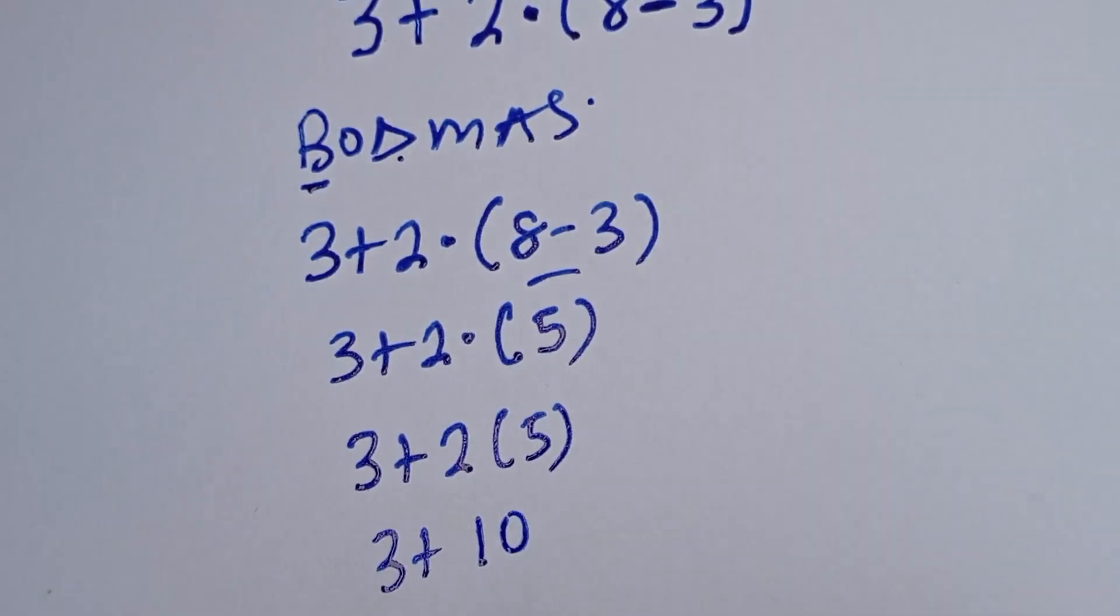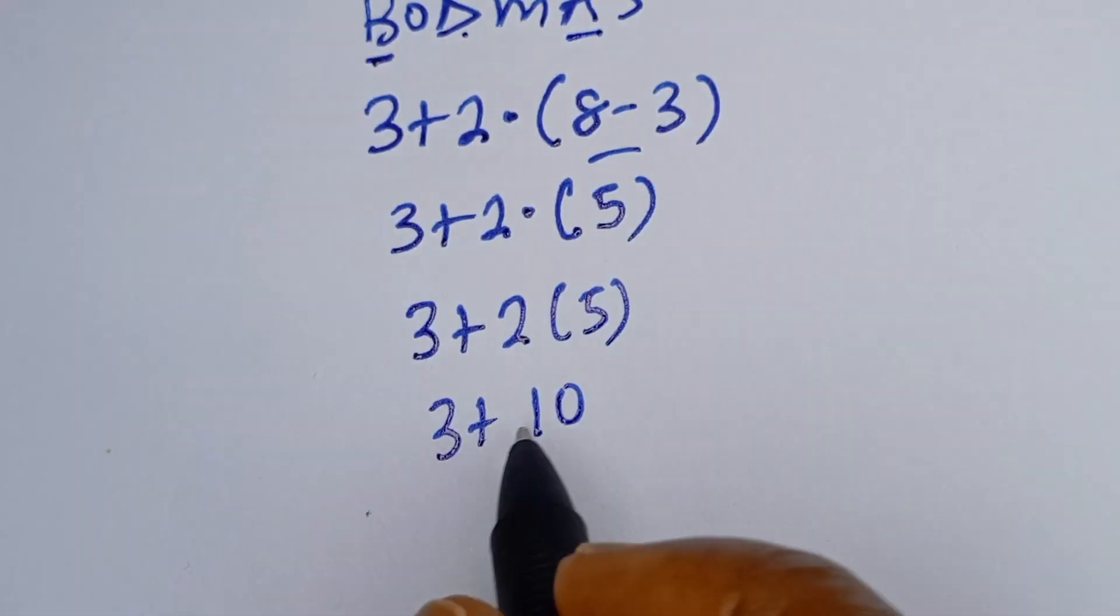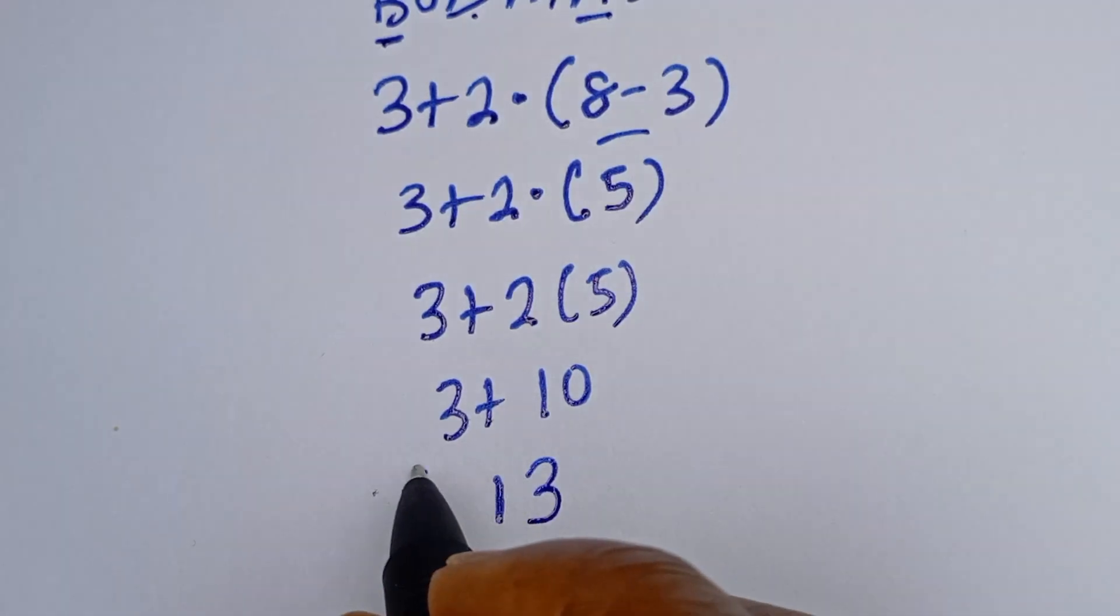Then we consider the addition: 3 plus 10 equals 13. And this is the final answer.